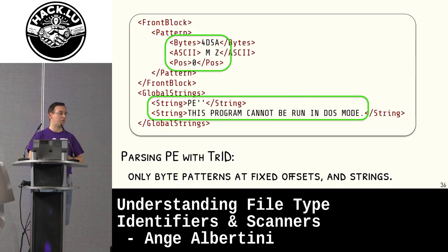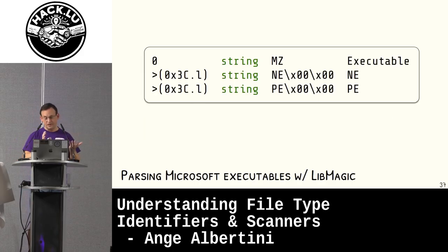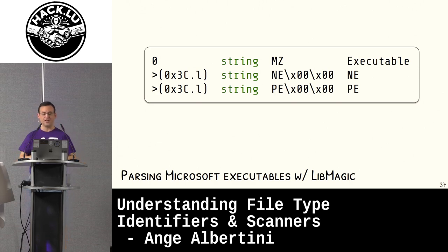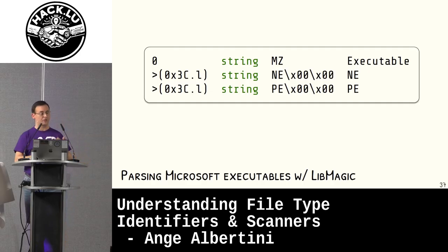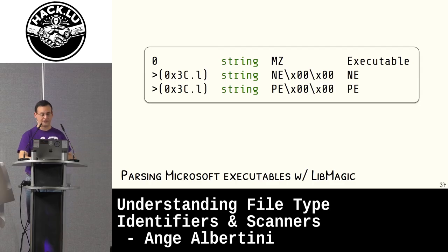TRID doesn't have the pointer operator either — it only checks for potential strings that are common. Very simple, but quite limited. LibMagic can actually look for this — the weird syntax is just saying: take the four-byte pointer at offset 3C and see if there is a string at that offset. Also, LibMagic is the only engine that allows you to have multiple conditional outputs and intermediary outputs — like, it's an executable, then, oh by the way, it's also an NE or a PE.